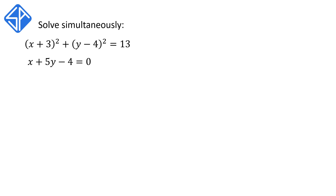In this video, we're going to look at another example on how to solve nonlinear simultaneous equations. Our first equation, x plus 3 squared plus y minus 4 squared is equal to 13, is an equation of a circle. Our second equation, x plus 5y minus 4 is equal to 0, is the equation of a straight line.